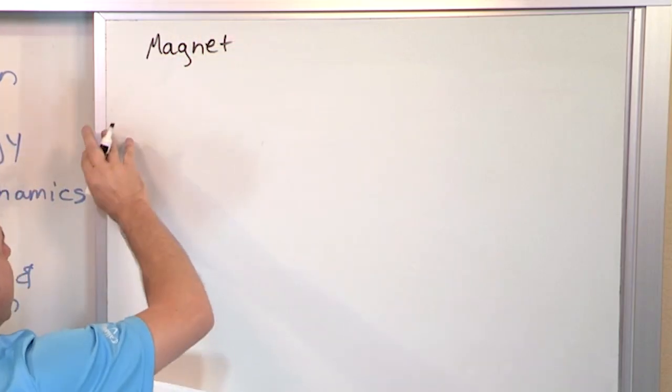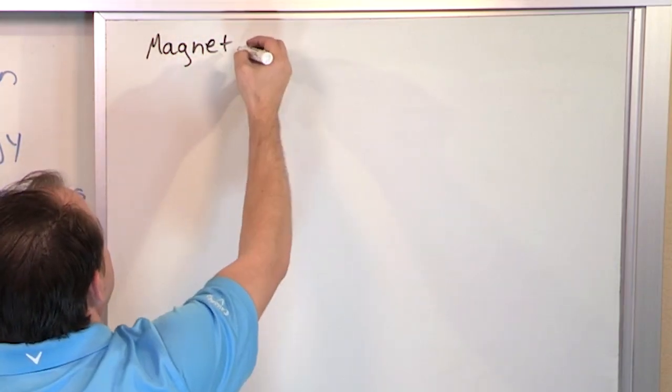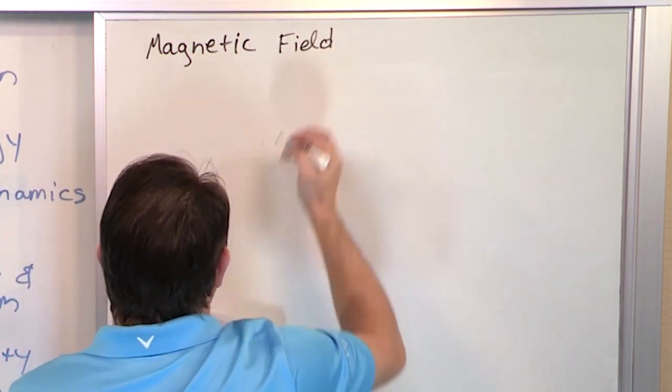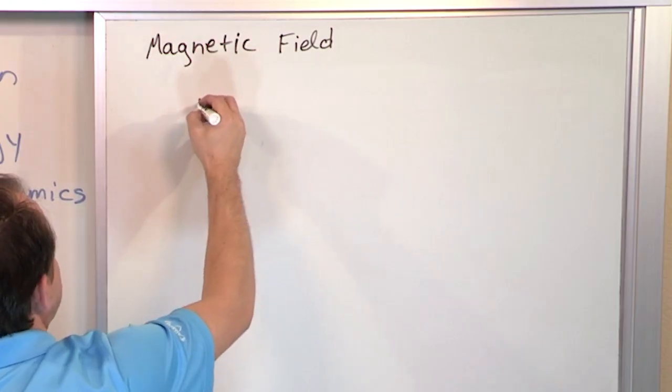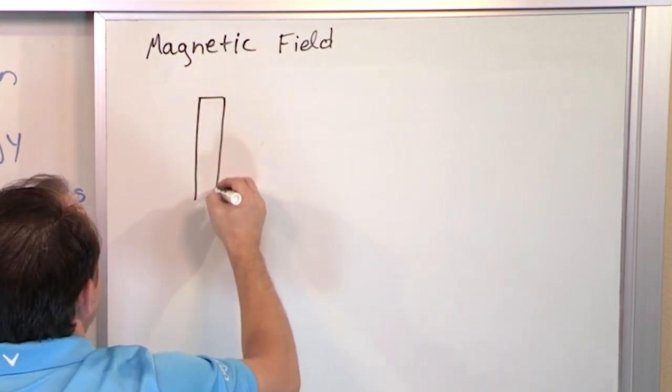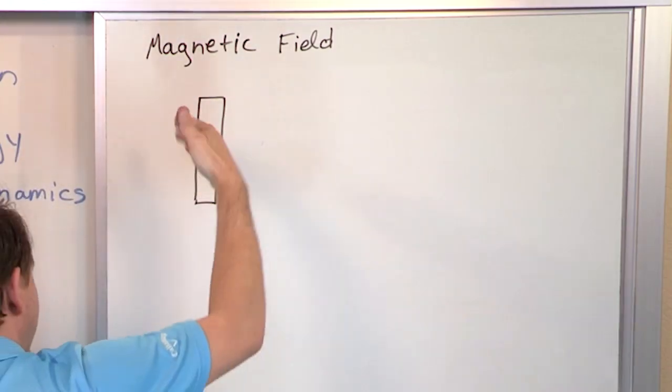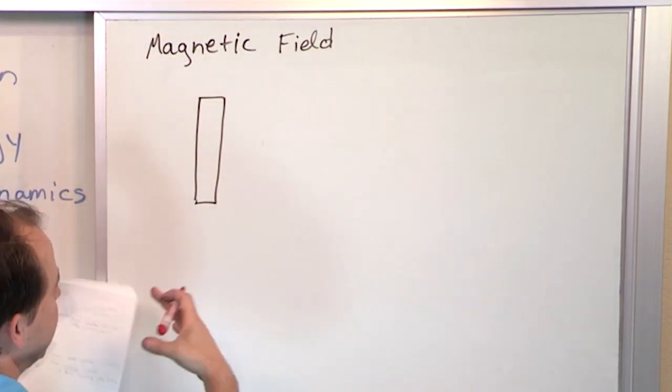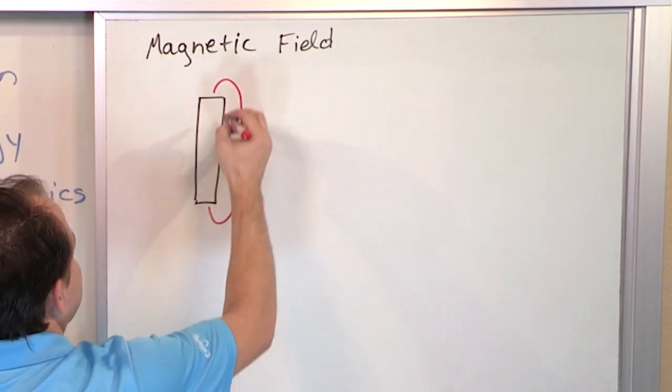So we call what surrounds a magnet a magnetic field, which you can actually do an experiment at home and try to check it out yourself. But if you have a bar magnet here, right, North Pole, South Pole, remember all that stuff when you were a kid? It turns out that we, in physics, talk about this invisible field that surrounds it.